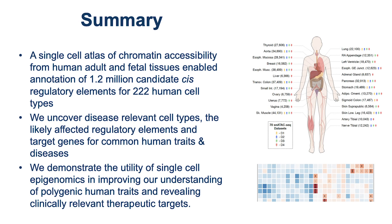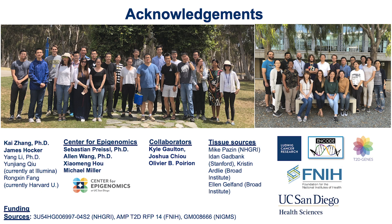In summary, we demonstrated that single-cell analysis of open chromatin has improved our understanding of polygenic human traits and revealed clinically relevant therapeutic targets. Through analysis of 30 adult human tissues, we defined cell type-specific regulatory elements and used them to identify disease-relevant cell types, likely causal variants, and target genes. We thank all current and past members of the Ren Lab and staff at UCSD Center for Epigenomics and our collaborators, as well as NIH ENCODE project, Foundation of NIH, T2D Genes Consortium, UC San Diego, and Ludwig Institute for funding this study. Thank you for watching and we hope you enjoy our research.